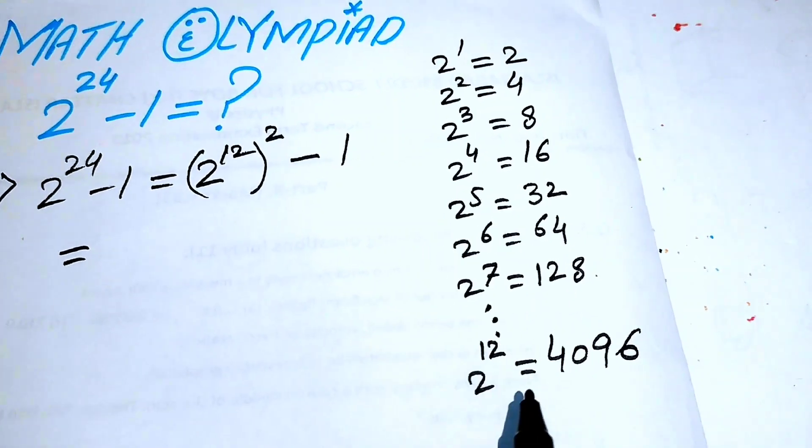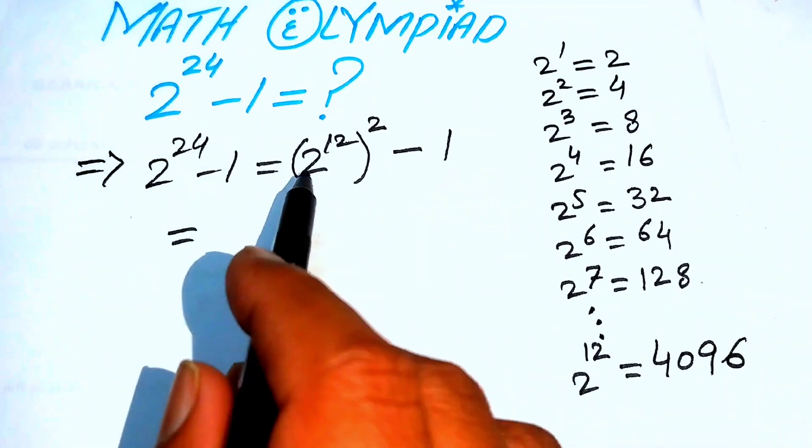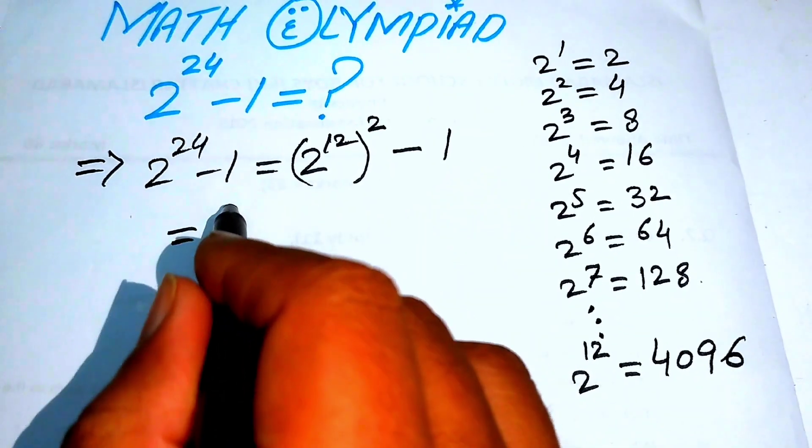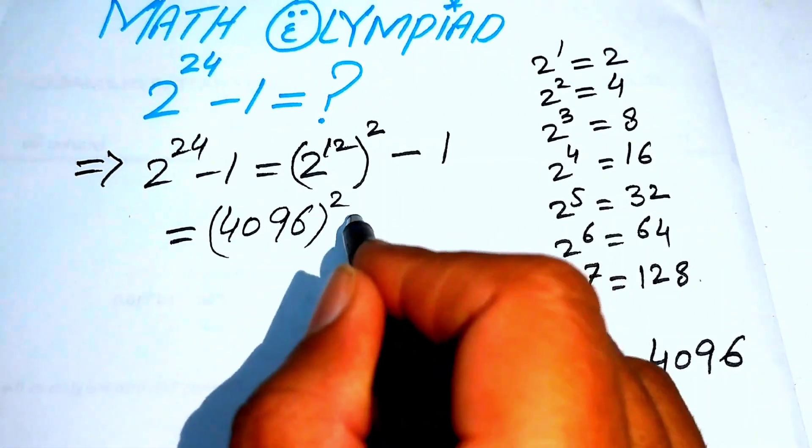In this pattern you easily get the value of 2 to the power of 12. So now we substitute the value of 2 to the power of 12 here and we write it as 4096 and its whole square minus 1.